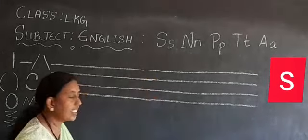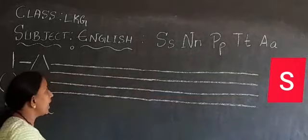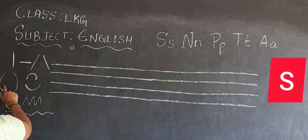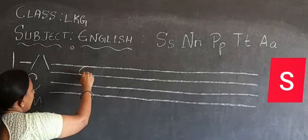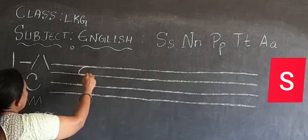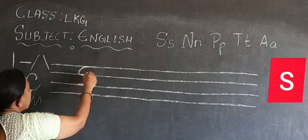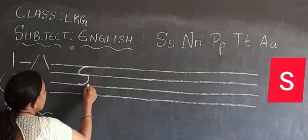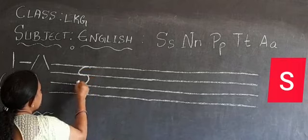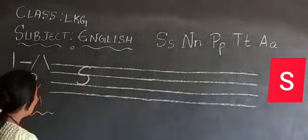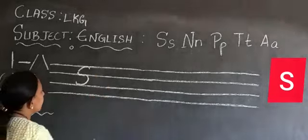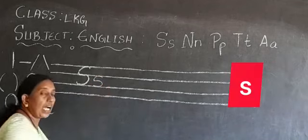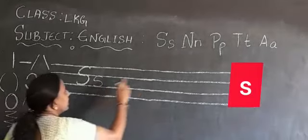This is the four-line notebook. While writing a capital letter, you should touch the first line and the third line. How should you write S? Take a half circle, and one more half circle — a left half circle and a right half circle. It becomes capital S. You should touch from the first line to the third line. For small S, the small letter should be written within two lines. Half circle and one more half circle — left half circle and right half circle. It becomes small S.